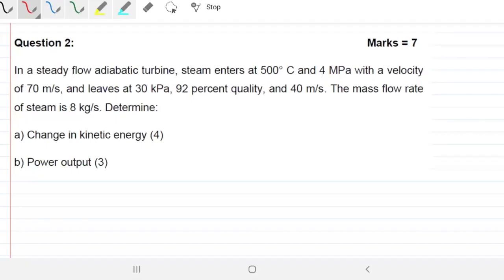So question number two, we have a steady flow adiabatic turbine and steam entering at 500°C and 4 megapascals with a velocity of 70 meters per second and leaving at 30 kilopascals, 92% quality, and 40 meters per second. The mass flow rate of steam is 8 kg/s. Determine the change in kinetic energy and the power output. This is an easy question, in my opinion. I think these are easy marks you can get out of this one.